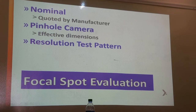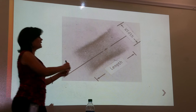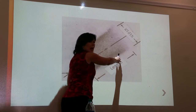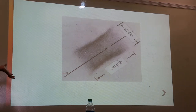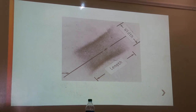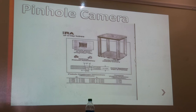Another way is to use a resolution test pattern to determine focal spot size. Resolution is measured in line pairs per millimeter. With a pinhole camera, you get a very small image on the receptor and measure it in millimeters. Here's what the pinhole camera tool looks like — it's a stand — and this is the kind of image you'll get.